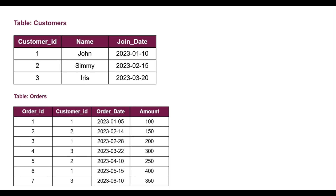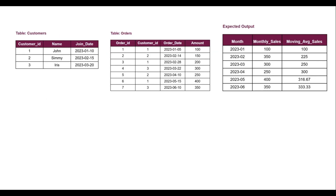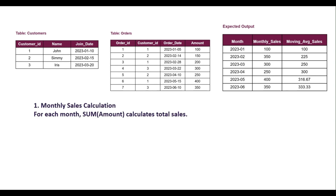These are the input tables — the customers table and the orders table — and this is how the output table should look. It has three columns: month, monthly sales, and moving average sales of the three months. To derive this output table, first we will have to calculate monthly sales. To do that, for each month we will calculate the total sales using the SUM function on the amount column.